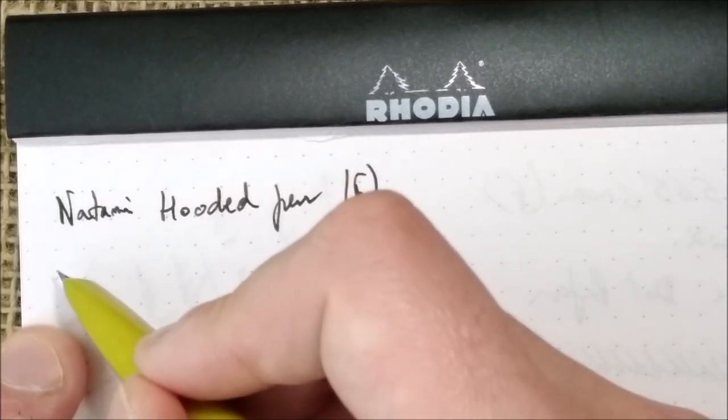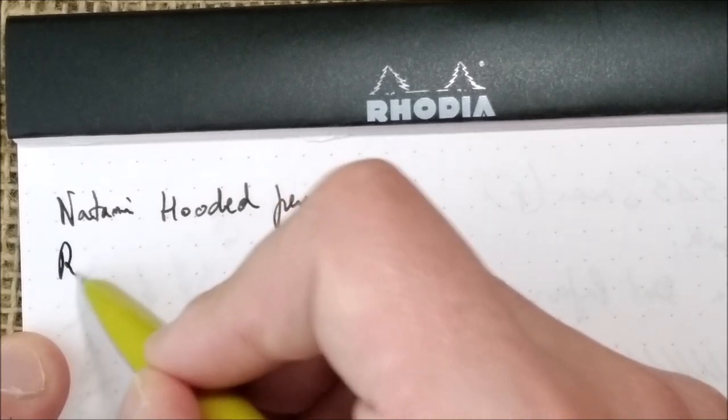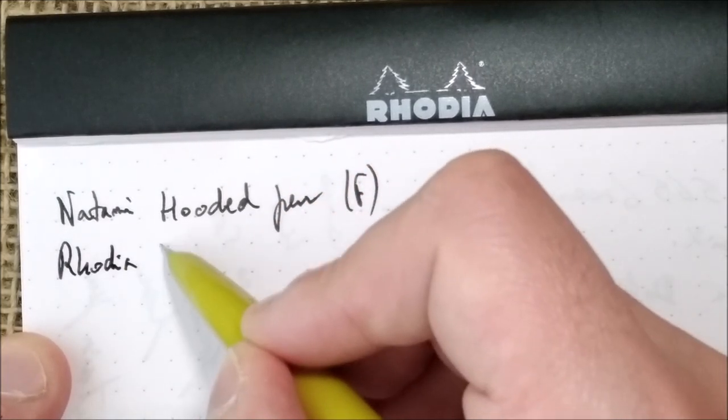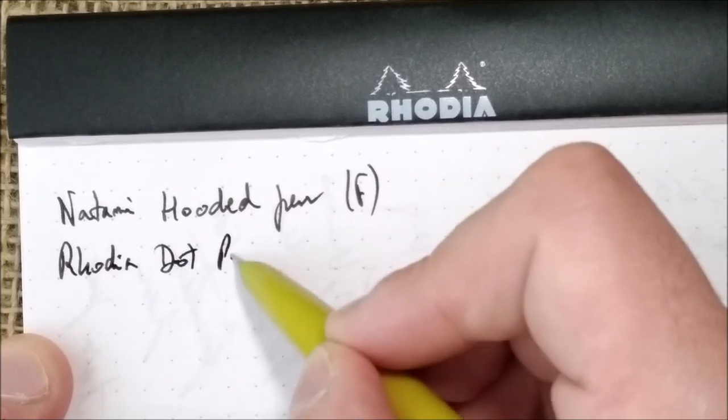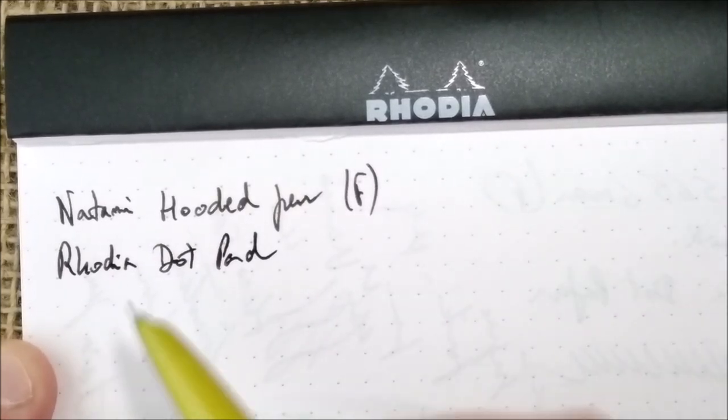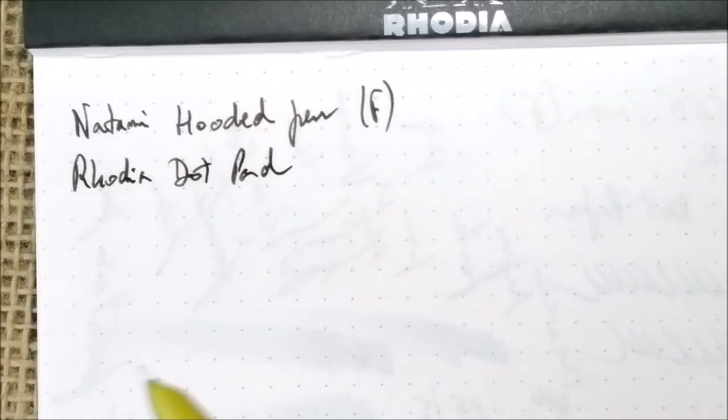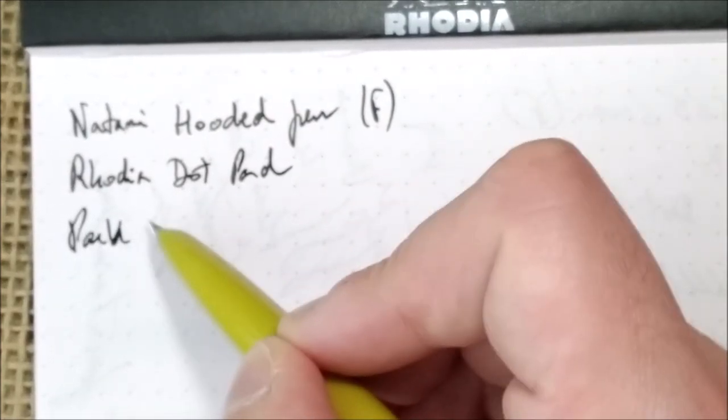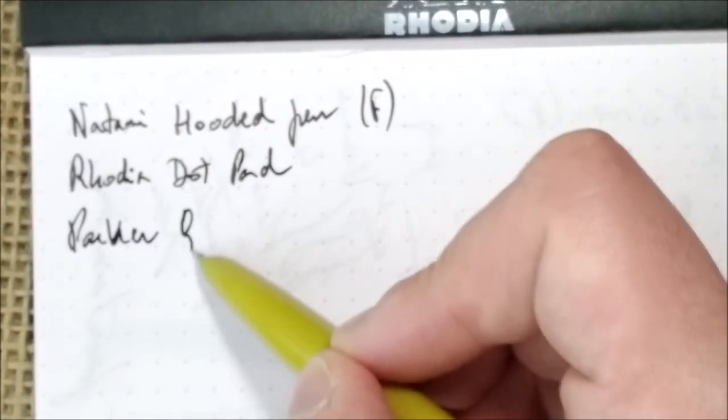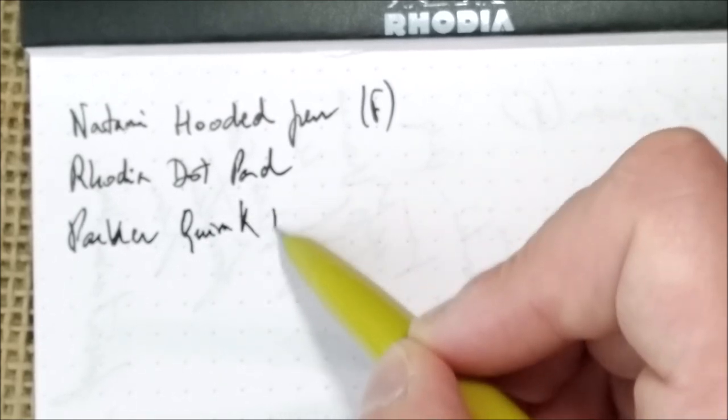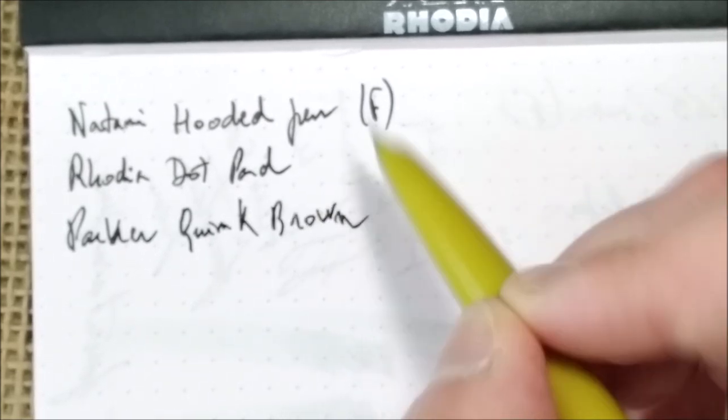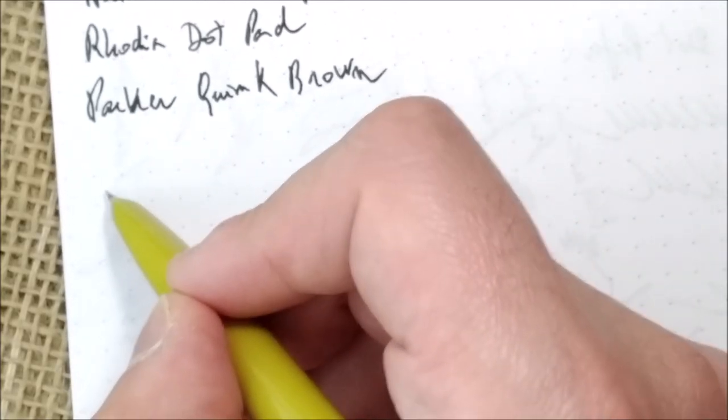Then, the paper is the Rhodia or Rhodia dot pad. And the ink I have in this pen is the very dark brown Parker Quink Brown. And now, let me put the paper this way because it's easier for me. Or maybe I can change the camera a little.